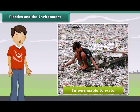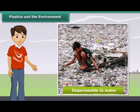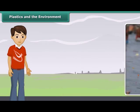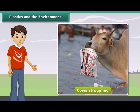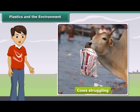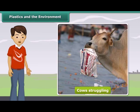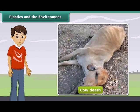As plastics form a cover on the ground surface and are impermeable to water, rain water would not be absorbed into the soil, thus diminishing our underground water reservoirs. Cows struggle to take out food from plastic bags thrown near garbage heaps and end up eating the plastic bags as well, which can choke their respiratory tract or form a lining in their stomachs, causing their death.